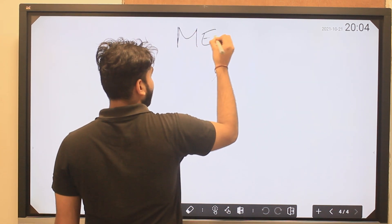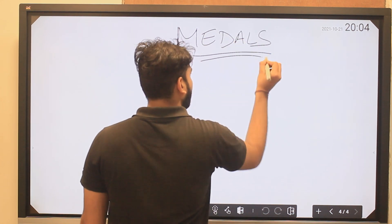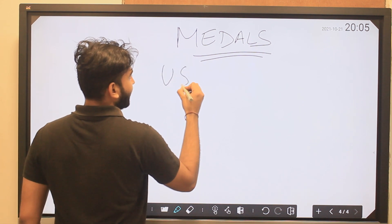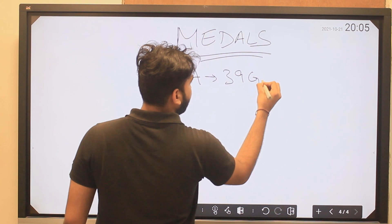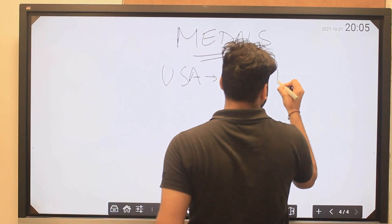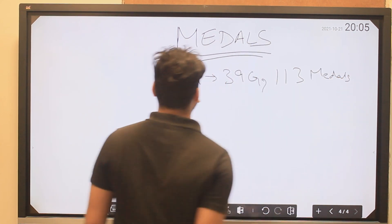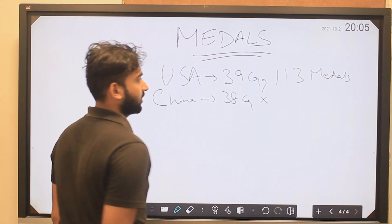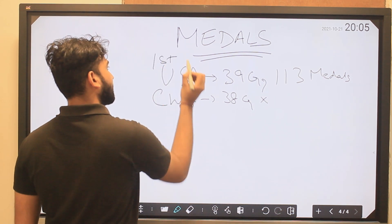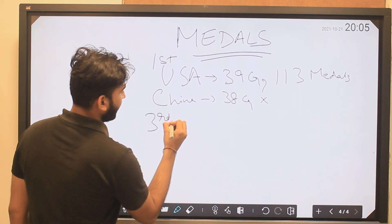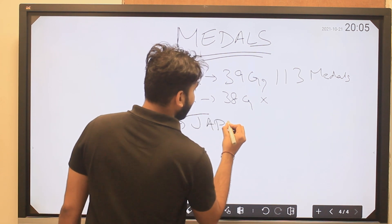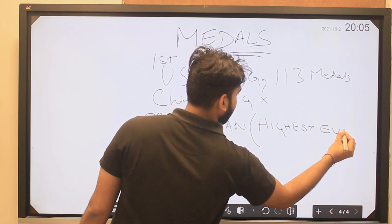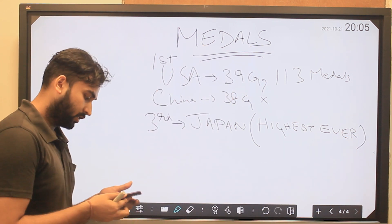Now for medal standings: USA finished first with 39 golds and a total of 113 medals. China was a close second with 38 golds. Japan finished third and recorded its highest ever medal tally at the Olympics — 58 medals including 27 golds.